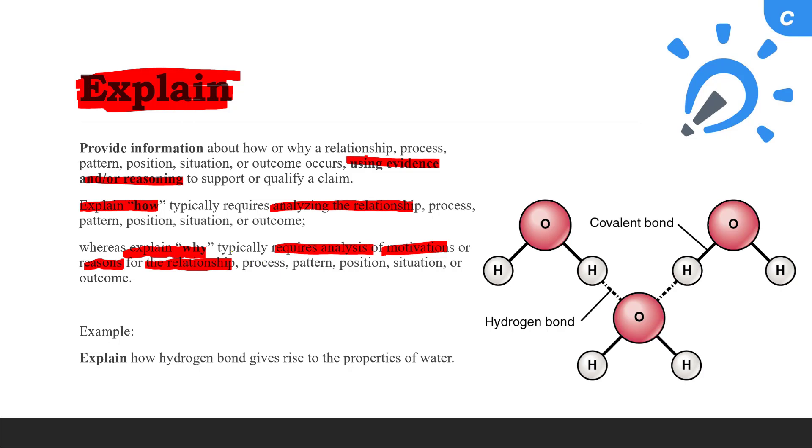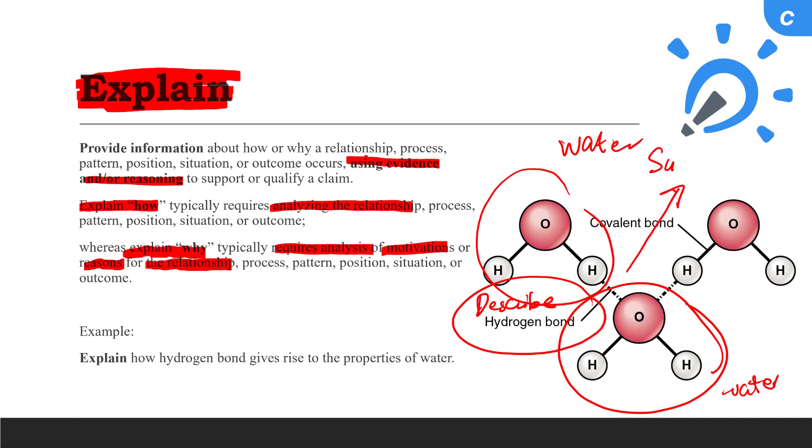In this example, let's say we were tasked to explain how hydrogen bond can give rise to the properties of water. Here we need to provide description of hydrogen bond, and in this case, it is a strong attraction between the water molecules. But we also need to explain and tell the reader how that attraction could lead to the properties of water, such as high surface tension.